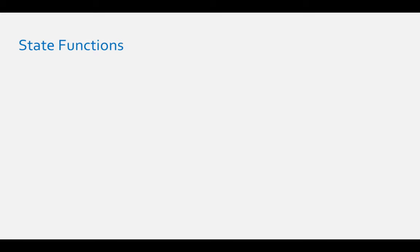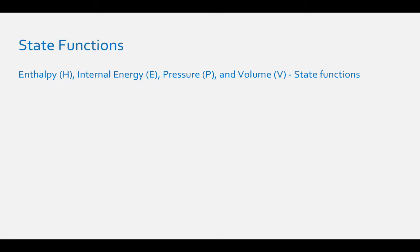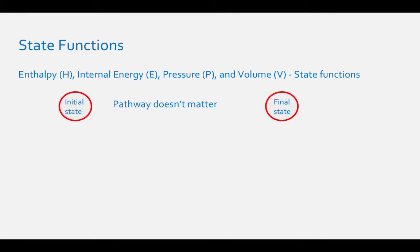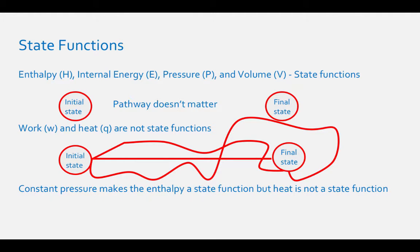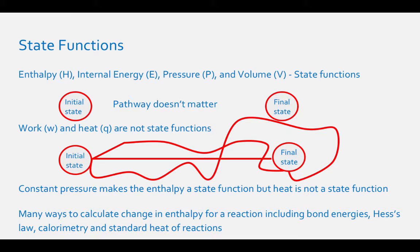Enthalpy, internal energy, pressure, volume, and temperature are all state functions, which can be determined because all the variables used to describe these quantities are capital letters. A state function only depends on the starting or ending states — it does not matter the path it takes to get there. Work and heat are not state functions, meaning the path does matter. Since enthalpy is a state function, there are many ways to calculate change in enthalpy, including bond energies, Hess's law, calorimetry, and standard heat of reactions.